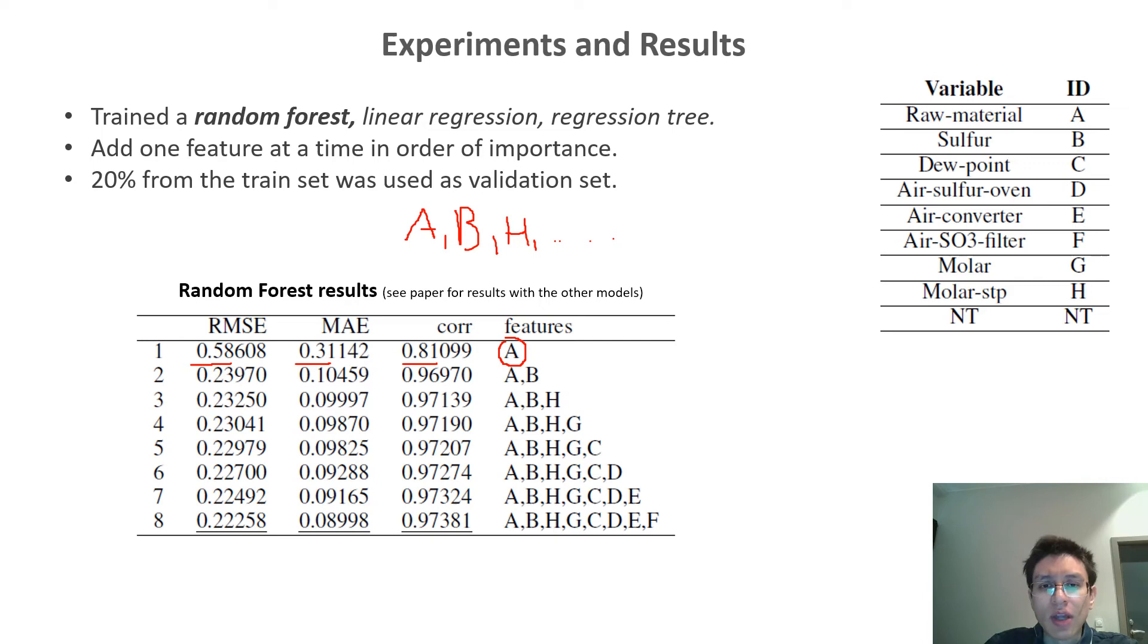Then we trained a new random forest model, but now including variable A and variable B. In this case, the error was reduced to 0.23, the mean absolute error was reduced to 0.1, and the correlation increased to 0.96.